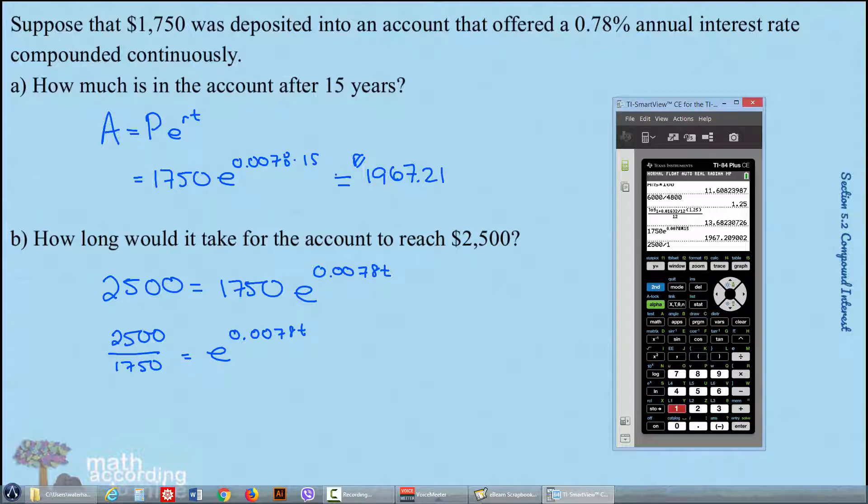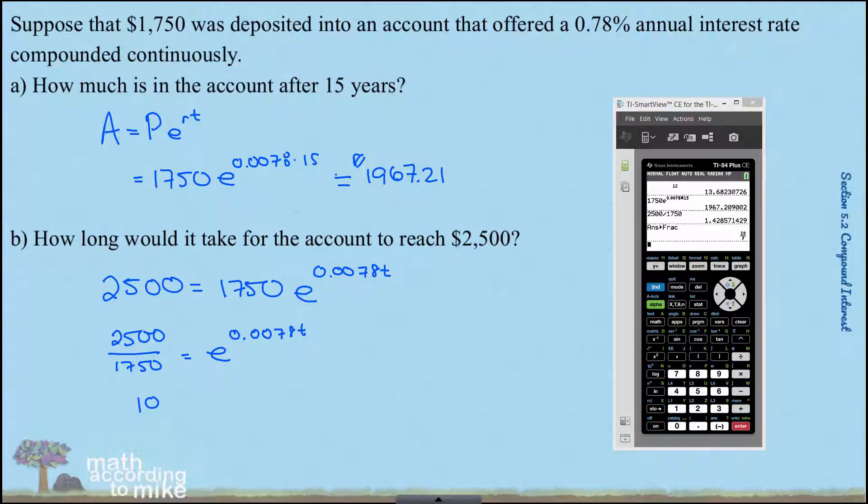I'm guessing it is, but who knows? It is an ugly decimal. So do not write that decimal because it's an approximation. Convert that to a fraction. We get 10 sevenths. That's a much better fraction.